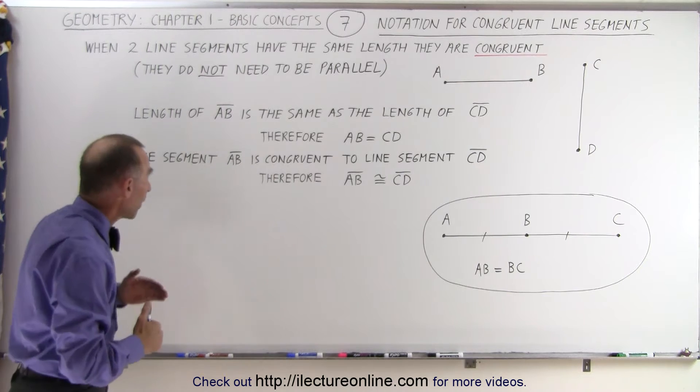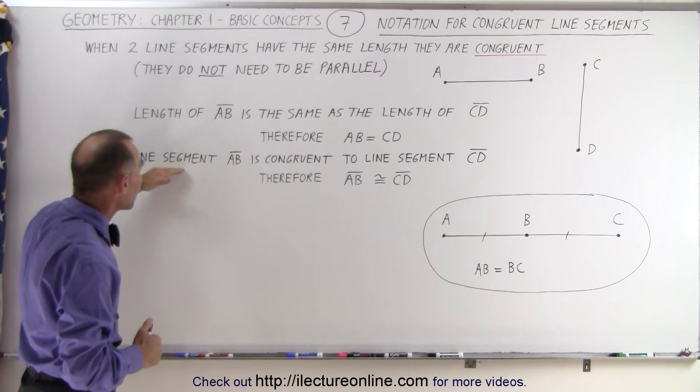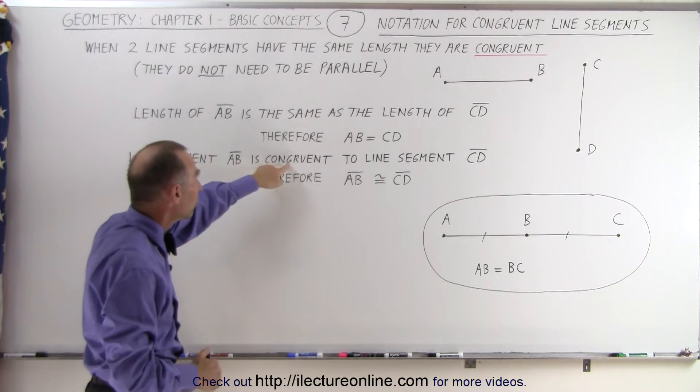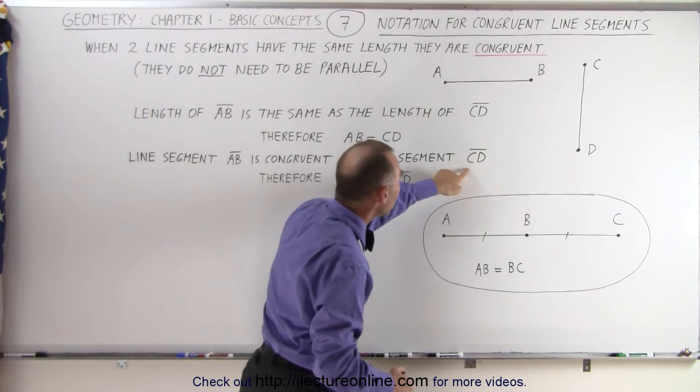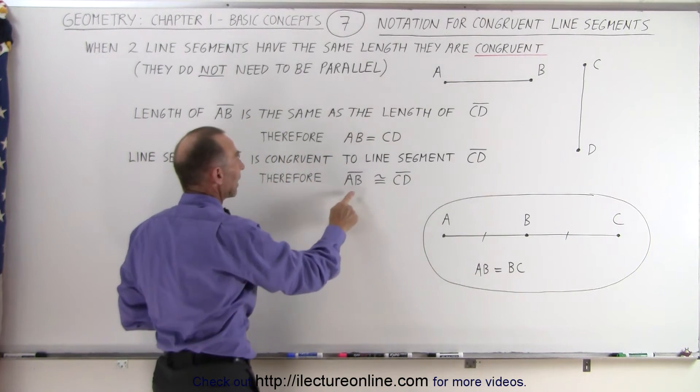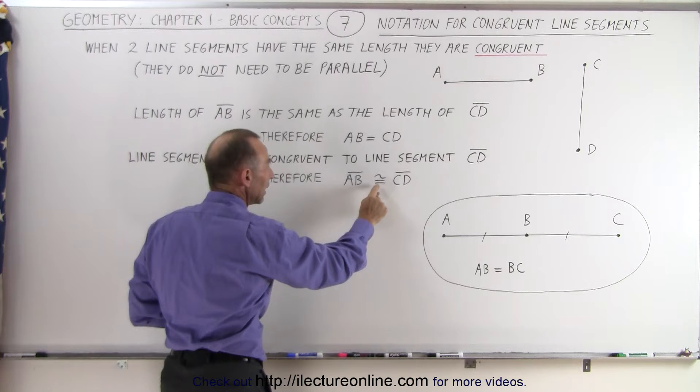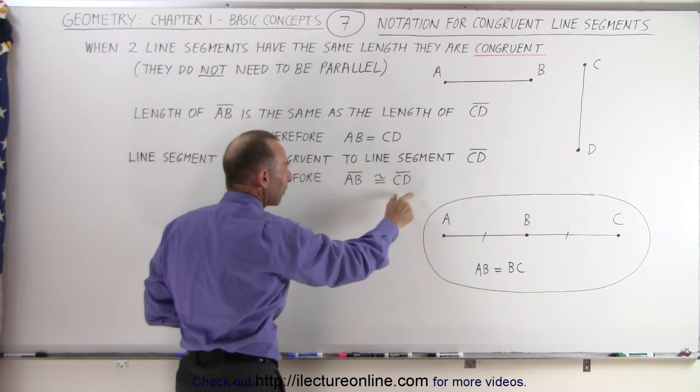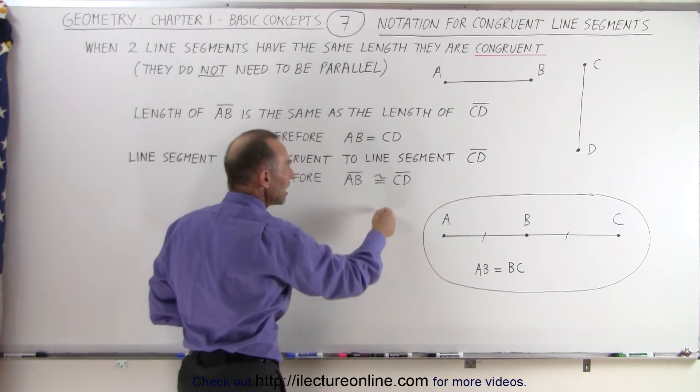However, if we write it like this—the line segment AB is congruent to line segment CD—then we can say that line segment AB, we write an equals sign with a little squiggle line on top, line segment CD.